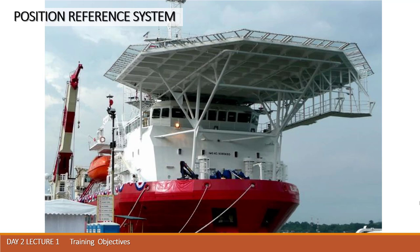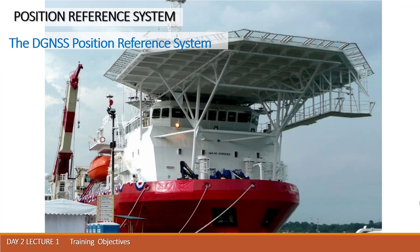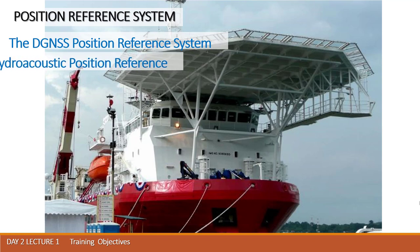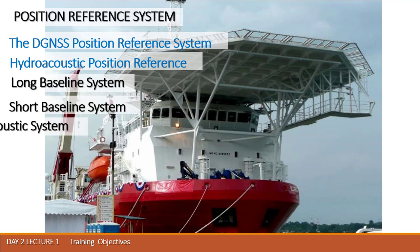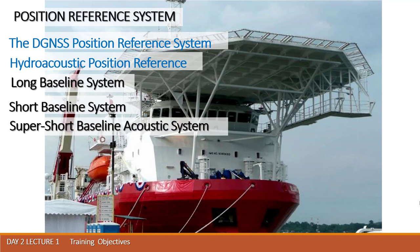First of all, we are going to discuss the main DGNSS position reference system principles. Then a large amount of time we are going to spend discussing the hydroacoustic position reference. Here we have three main types: the long baseline system, short baseline system, and super short baseline acoustic system. Then we will focus on mechanical systems such as taut wire position reference.